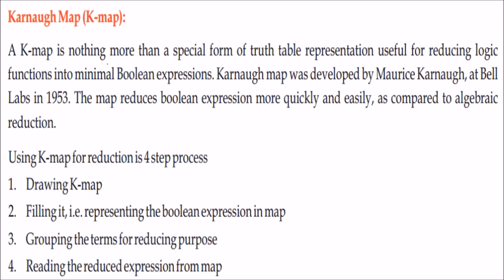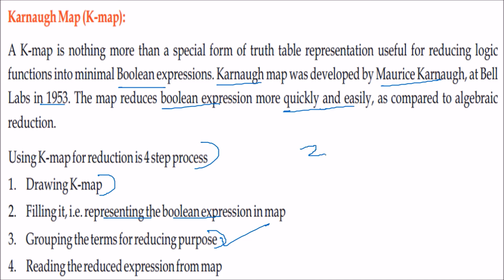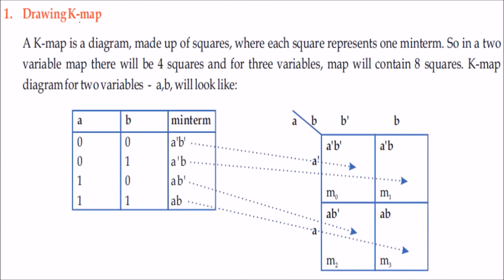The Karnaugh map is nothing more than the truth table — it is a specialized form of representation for minimizing Boolean expressions. The K-map was developed by Maurice Karnaugh at Bell Labs in 1953, specifically to reduce Boolean expressions quickly and easily. There are four steps: draw the K-map, fill the K-map using the Boolean expression, group the terms, and read the reduced expression.